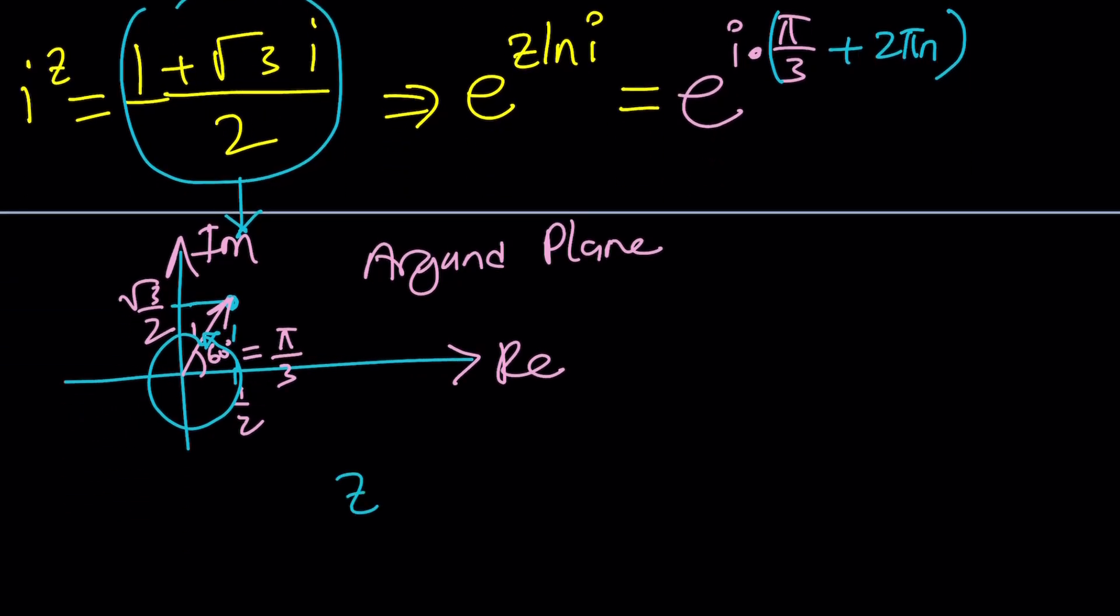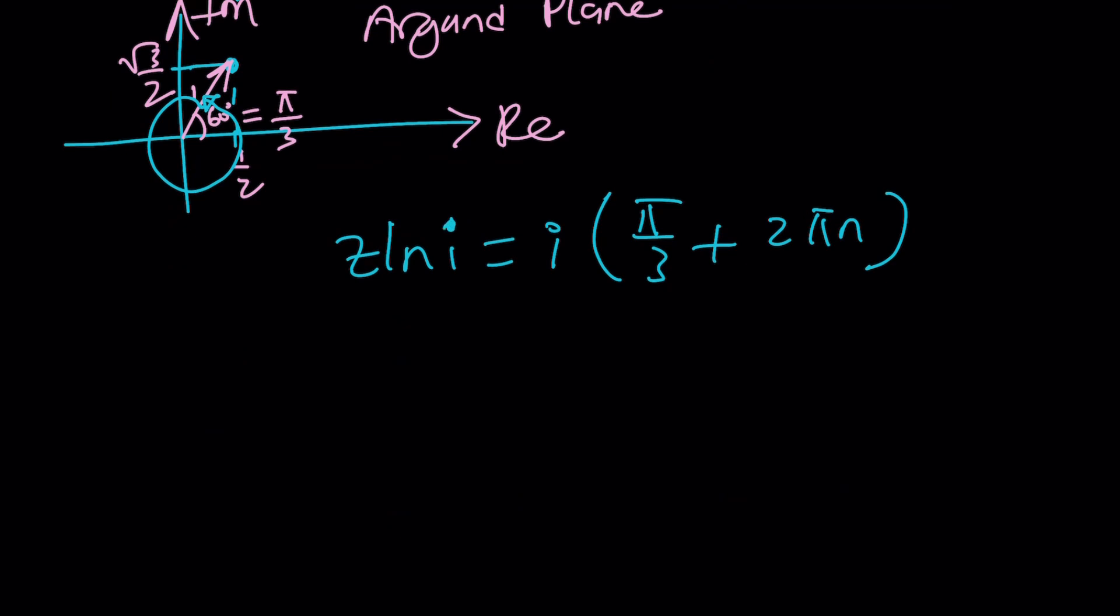And from here, we get the following. Z ln i equals i times pi over 3 plus 2 pi n. So here's your next challenge. Write ln i. What is ln i? So let me give you a formula for the natural log of a complex number. ln z can be written as ln absolute value of z plus i times the argument of z. And in this case, we don't know the argument of z, do we? Well, we do, because z is i.